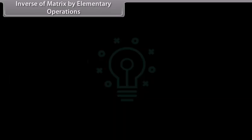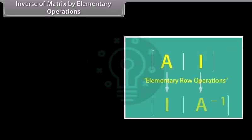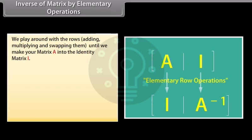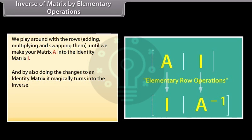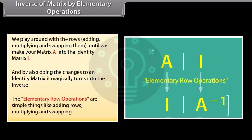Inverse of a matrix by elementary operations. This is a fun way to find the inverse of a matrix — we play around with the rows: adding, multiplying, and swapping them, until we make matrix A into the identity matrix I. By also applying every change to an identity matrix, it magically turns into the inverse. The elementary row operations are simple: adding rows, multiplying, and swapping. Let us go through an example.